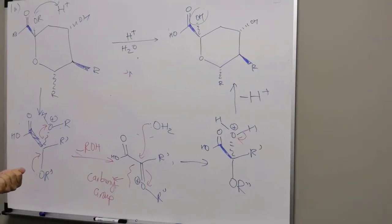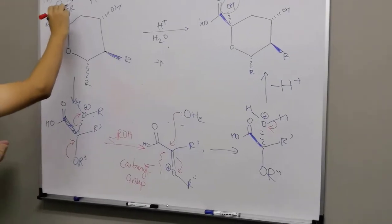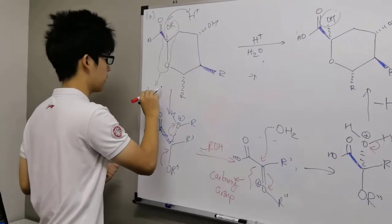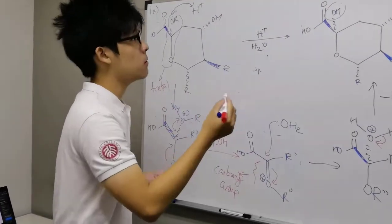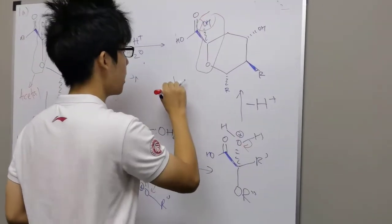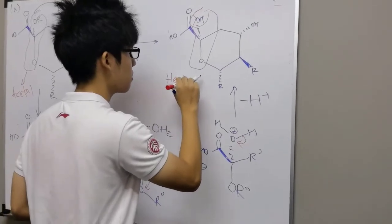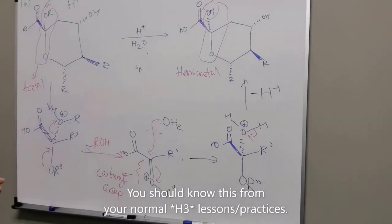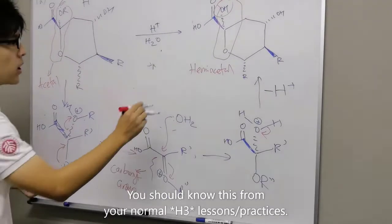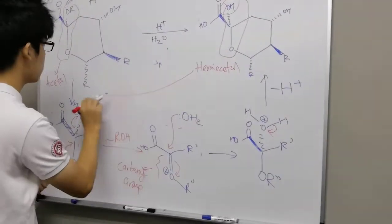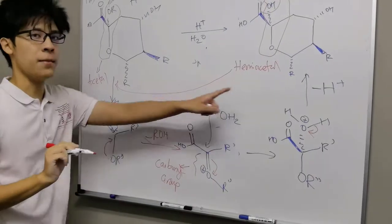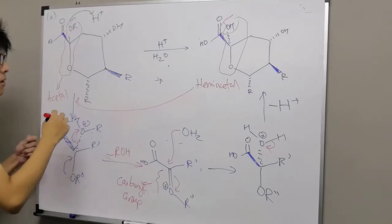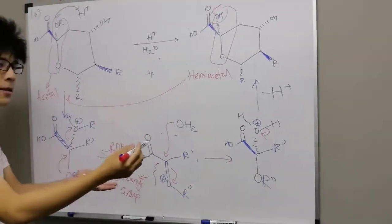Another way to look at this problem: you'll notice that this group here is actually a hemiacetal. As we recall from our normal training, we actually know how to form an acetal from a hemiacetal. So essentially this whole mechanism is the reverse — forming a hemiacetal from an acetal.